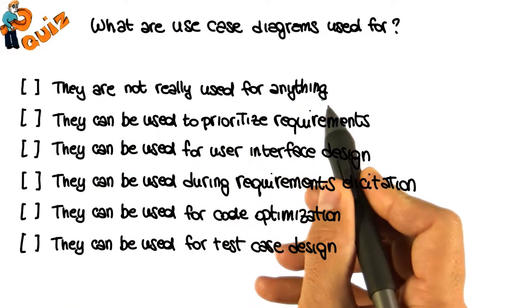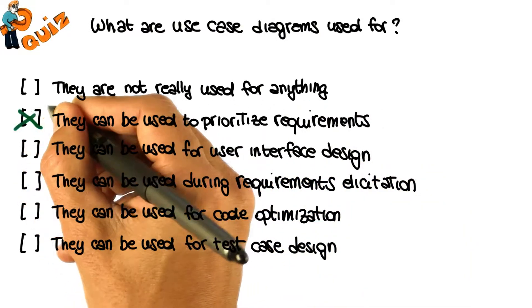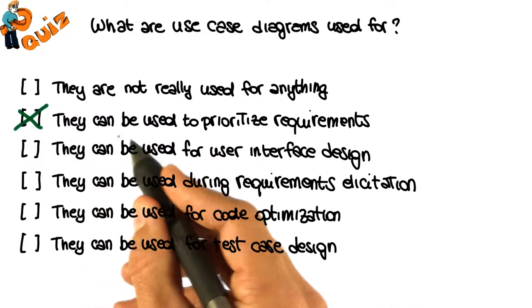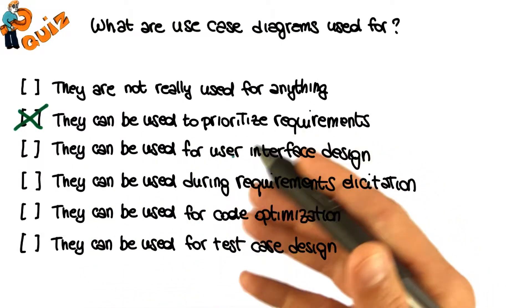Well, this is definitely not true. They are used for something. The second answer is a correct one, because you can order the use cases that you plan to realize according to your prioritization criteria.